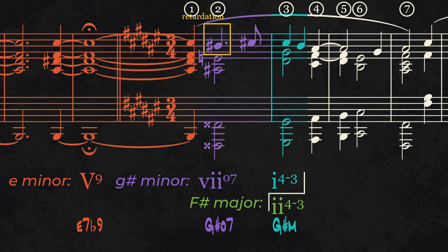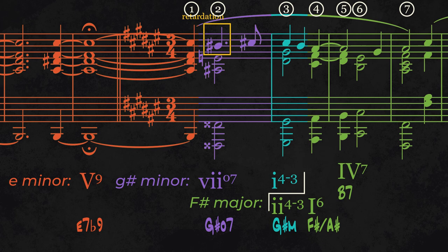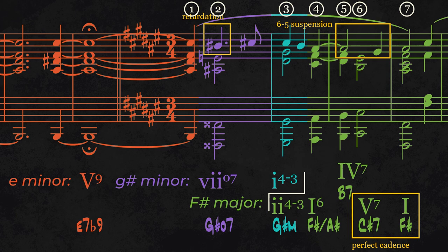In the final key of F sharp major, chord three is two, chord four is one six, and chord five is seven of four. Chord five contains the last predominant chord of the progression, with chord six being a dominant 7th with a 5-6-5 suspension. This resolves to one, forming a perfect cadence and confirming the modulation to F sharp major.